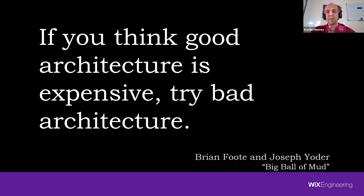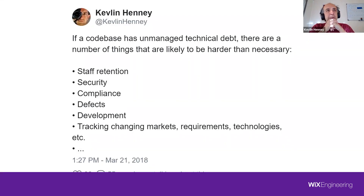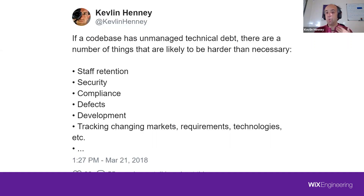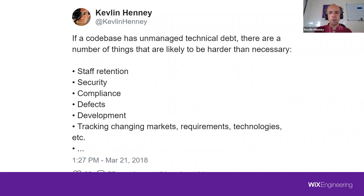When people talk about bad architecture, one of the most obvious things they highlight is technical debt. A code base with unmanaged technical debt makes a number of things harder than necessary — things requiring more effort, time, and grief: retaining staff, security. If you have a code base with unmanaged technical debt, you're saying you're not really sure what all the code does, some of it's a bit messy, you don't really have tests for it, and you're not sure whether you can get rid of certain pieces.